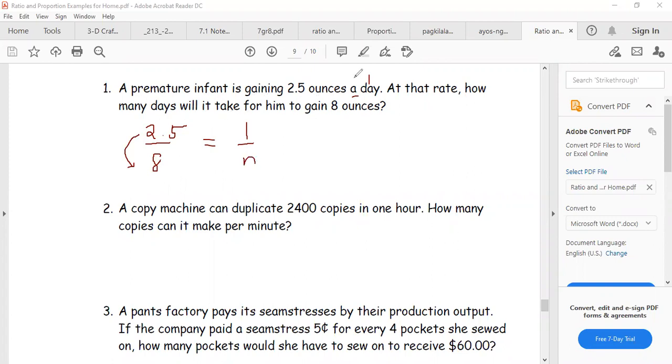And then you cross multiply. So that would be 2.5 N is equal to eight times one. So ito yun, 2.5 magkasama si N, eight magkasama si one. So eight times one, that would be eight. So sulat lang natin yung 2.5 N is equal to eight.